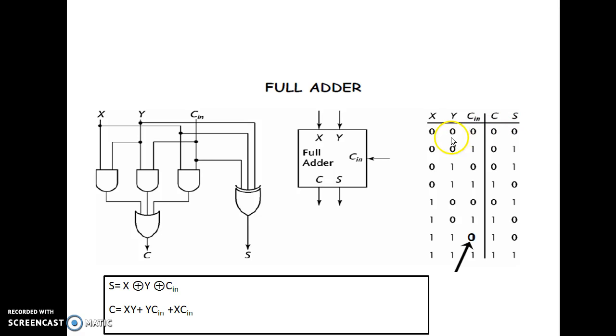Now, how do we follow this truth table? 0 plus 0 plus 0: sum is 0, carry 0. 0 plus 0 plus 1: sum 1 and carry 0. Remember, the plus refers to OR operation.